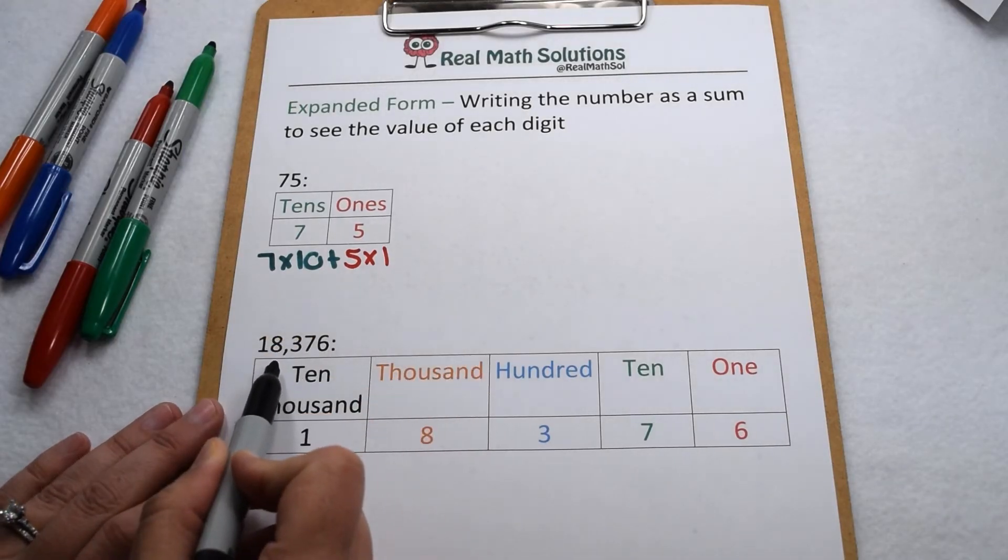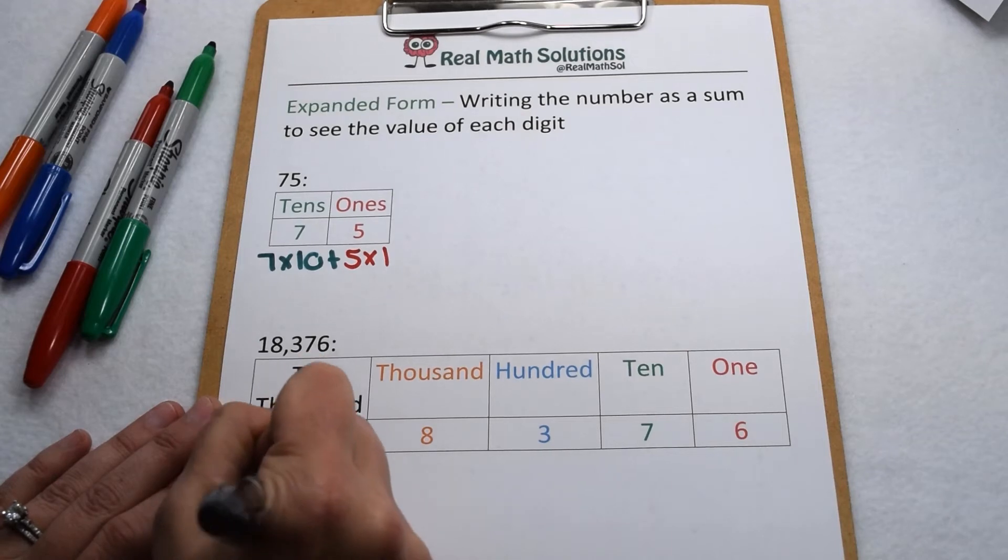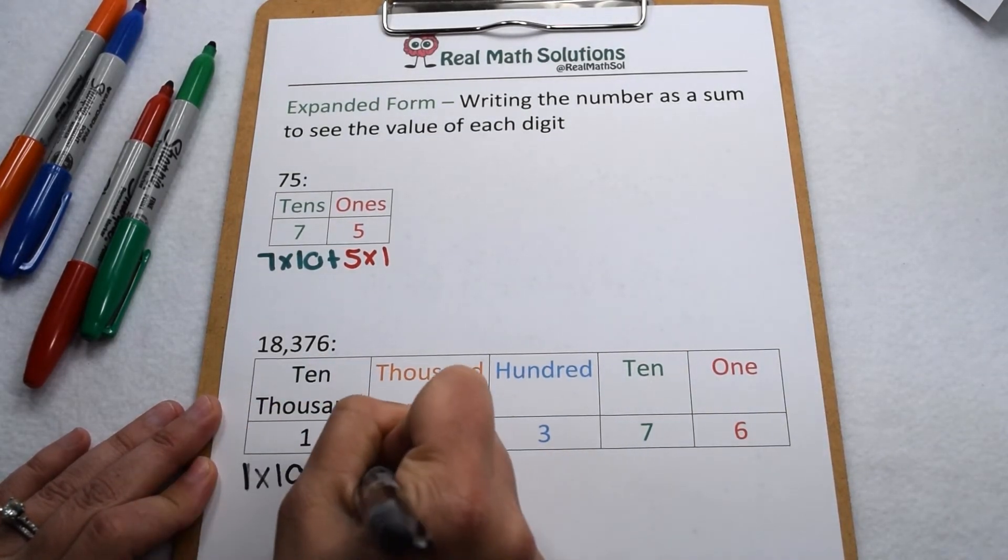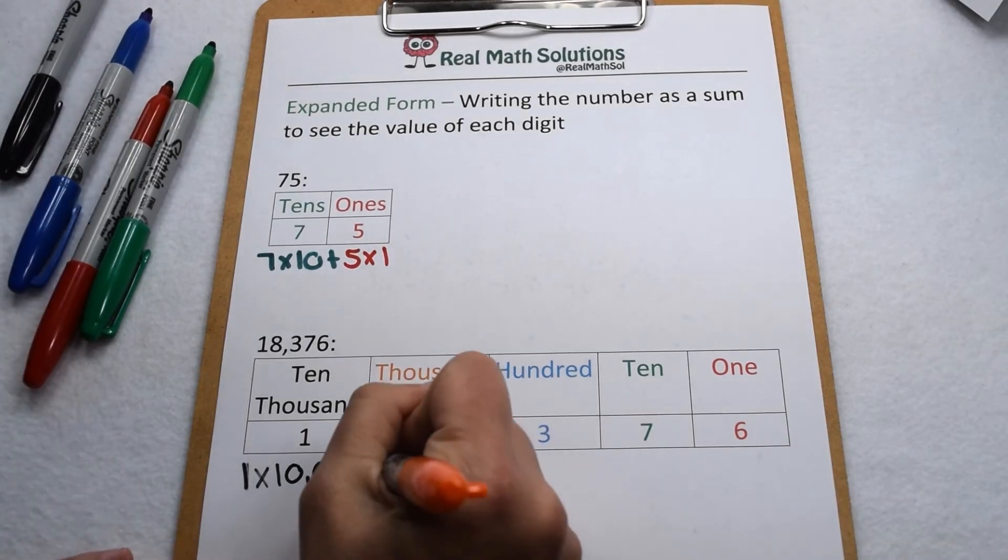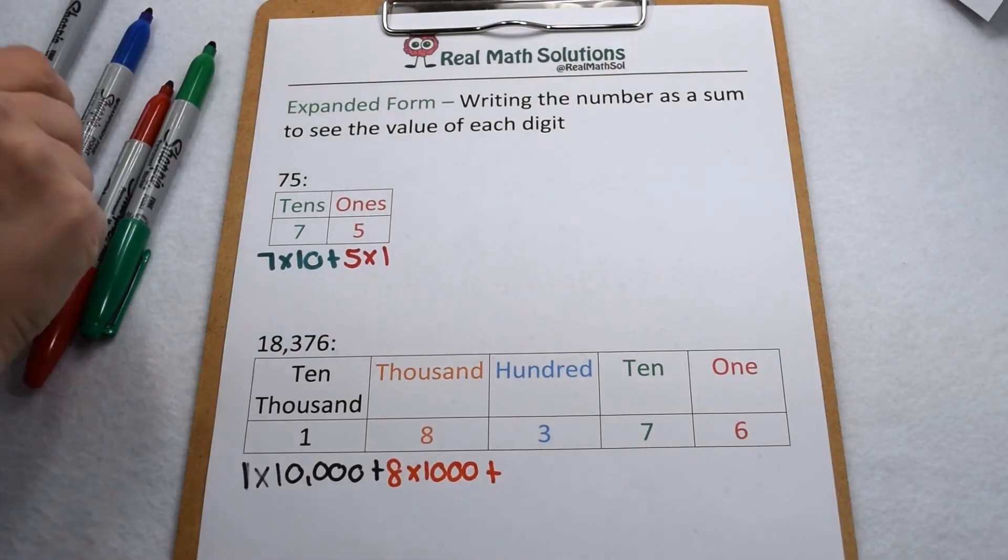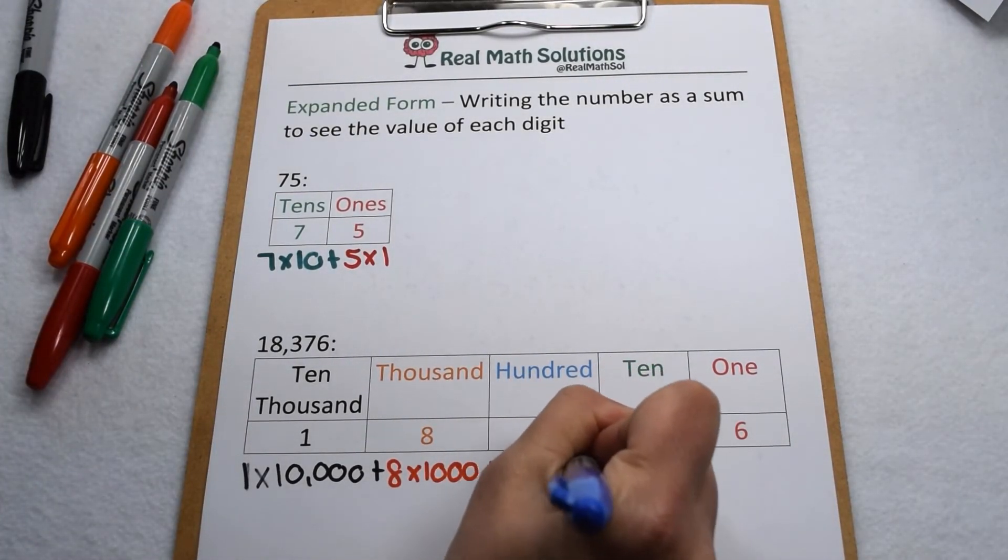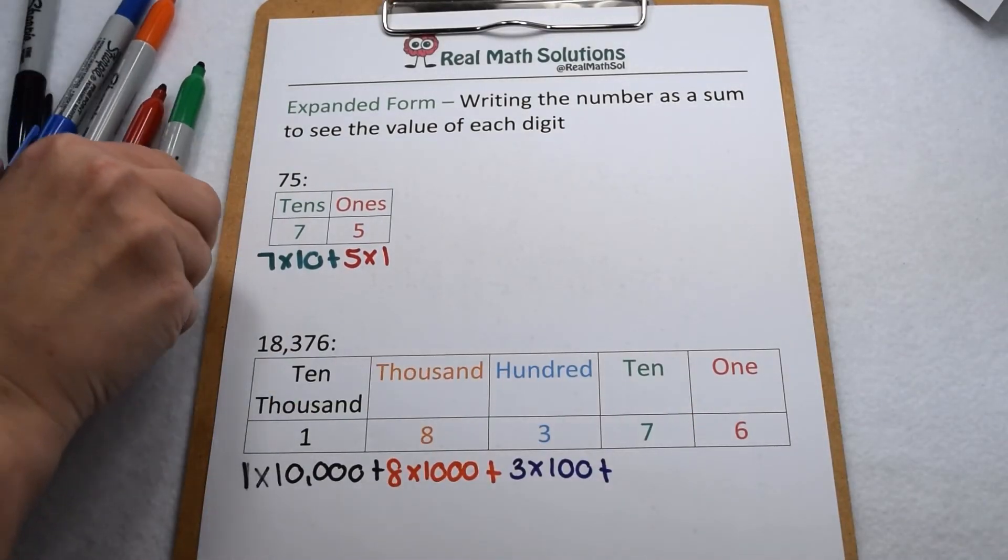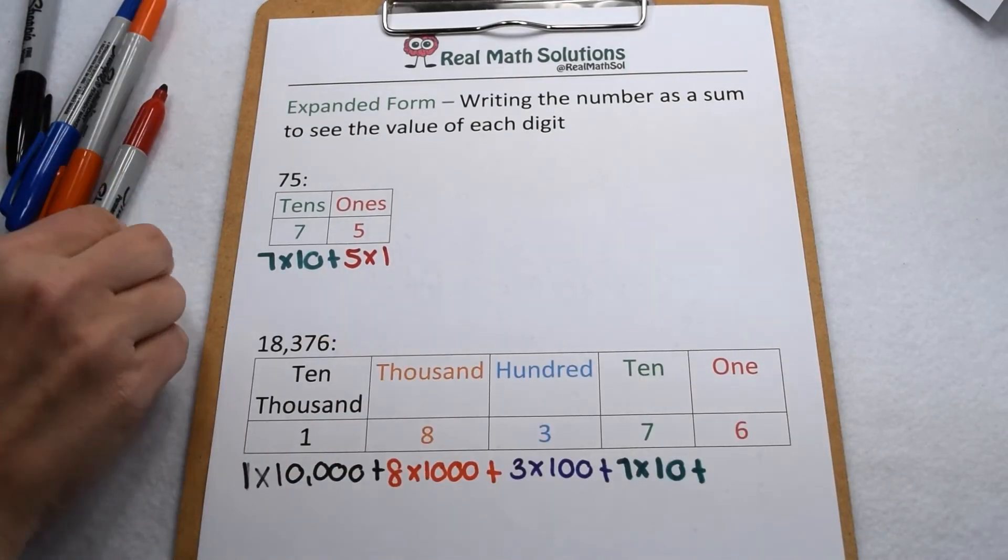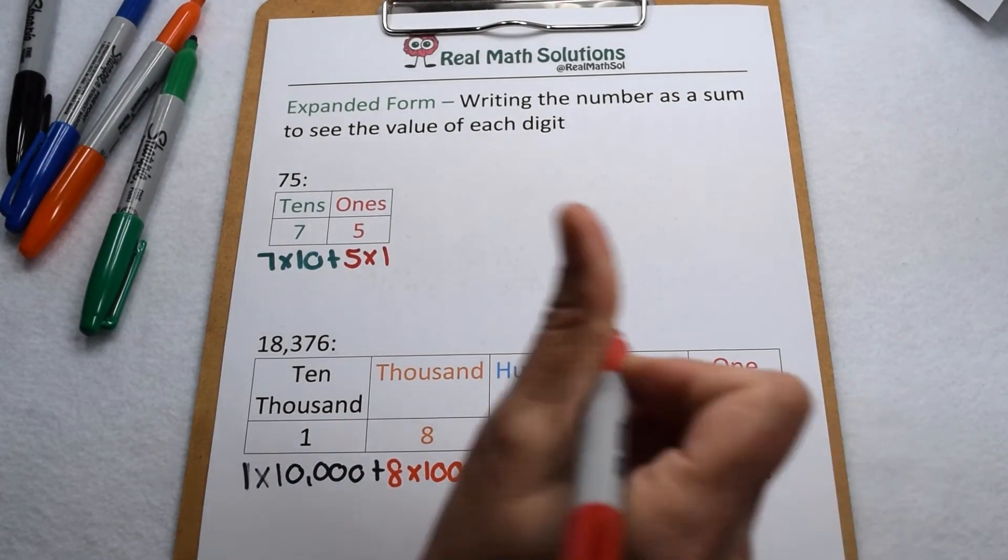We could do the same here for 18,376. Our 1 is in the ten thousands place, so that means it's worth 1 group of ten thousand. Then we have 8 in the thousands place. That means it's worth 8 groups of one thousand. Next, we have 3 in the hundreds place. That means it's worth 3 groups of 100. That's followed by 7 in the tens place, which is worth 7 groups of ten. And then finally, we have 6 in the ones place, which is worth 6 groups of one.